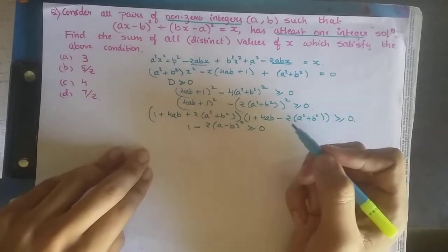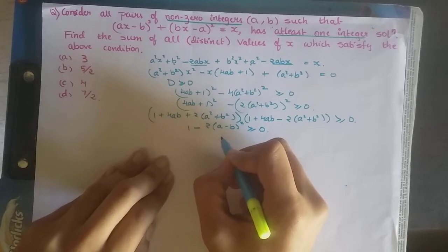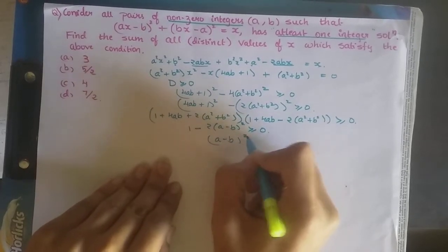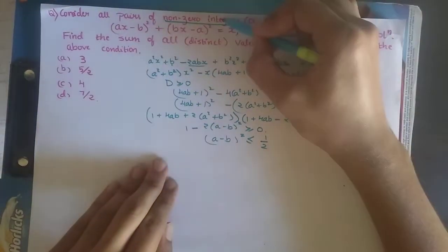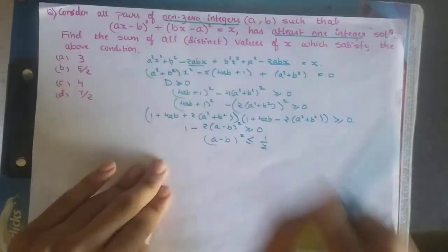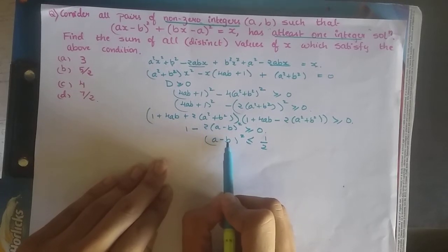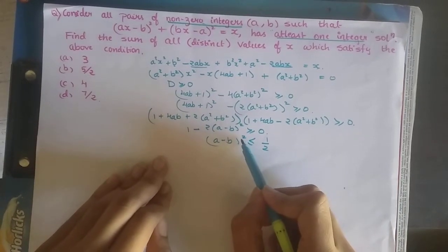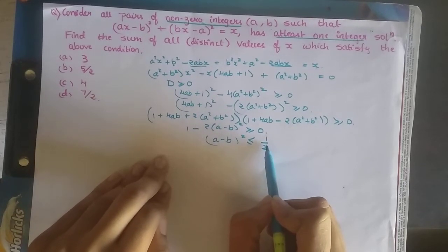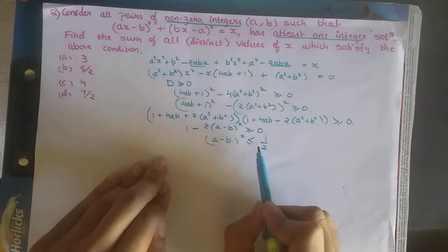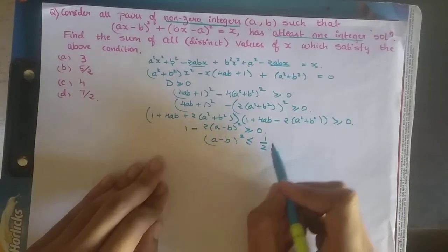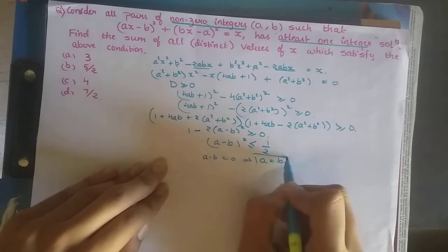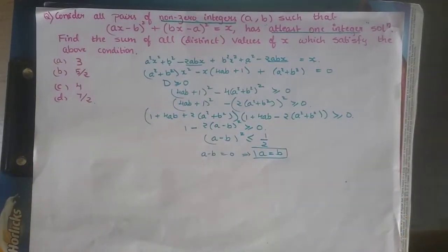Rearranging the inequality gives (a − b)² ≤ 1/2. Now this is where the non-zero integer condition comes in. Since a and b are non-zero integers, their difference is an integer, and its square is a non-negative integer. A non-negative integer cannot be less than or equal to 1/2 unless it is 0. So (a − b)² = 0, which means a = b.